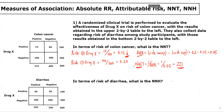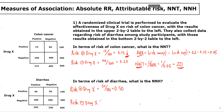Moving to the second question: in terms of risk of diarrhea, what is the number needed to harm? We need to calculate the risk of diarrhea in each group — among those who received drug X and those who did not. The risk of diarrhea among those who received drug X is 50 over 100, equal to 0.5. And the risk among those who did not receive drug X is 200 over 500, equal to 0.40.